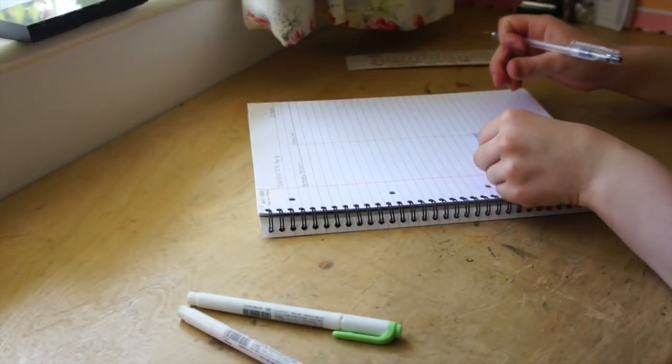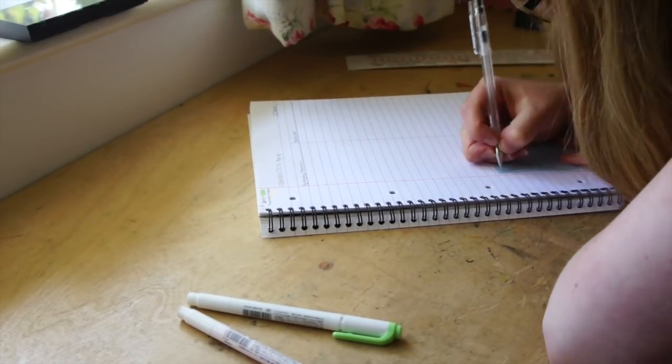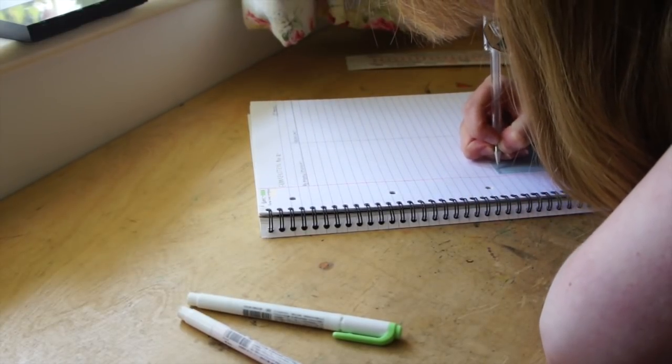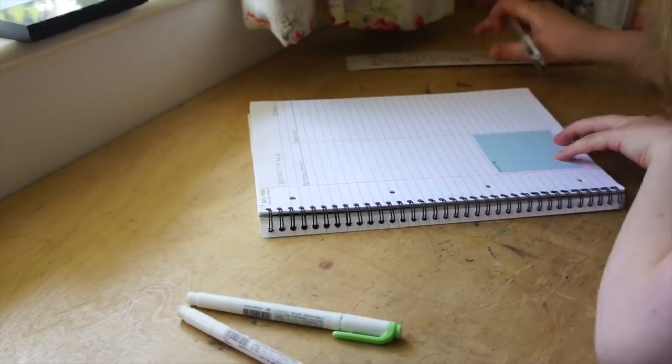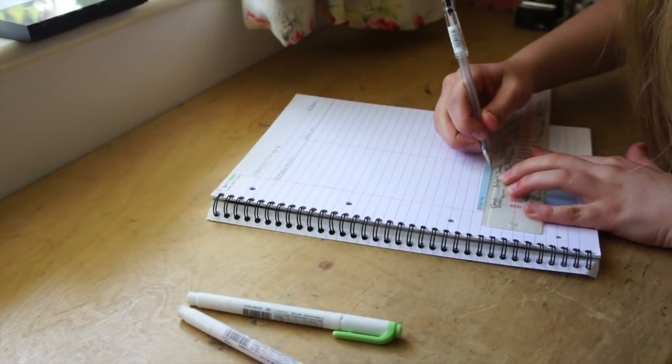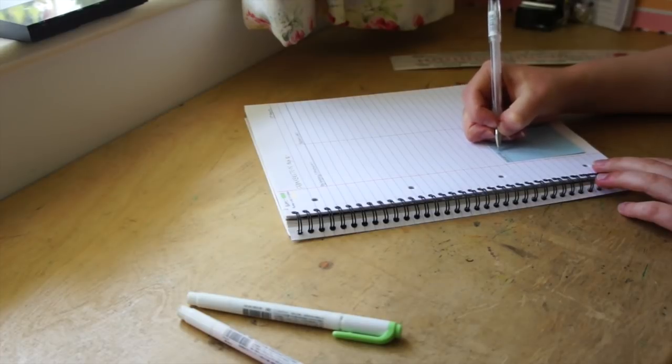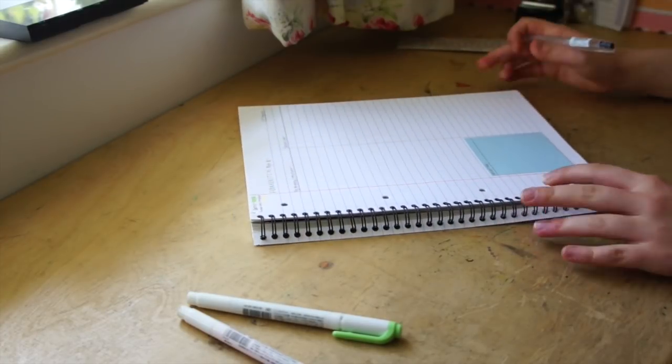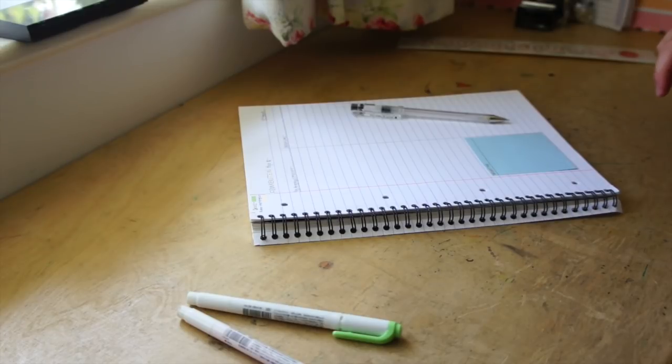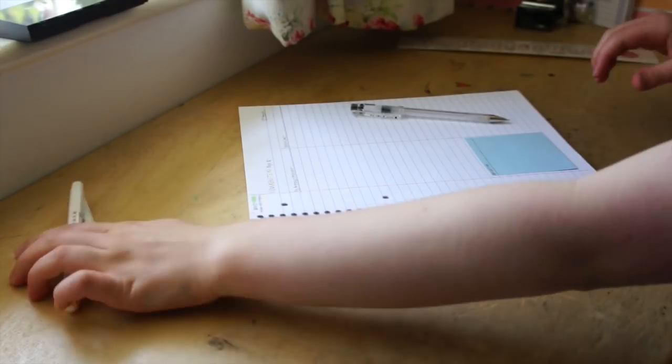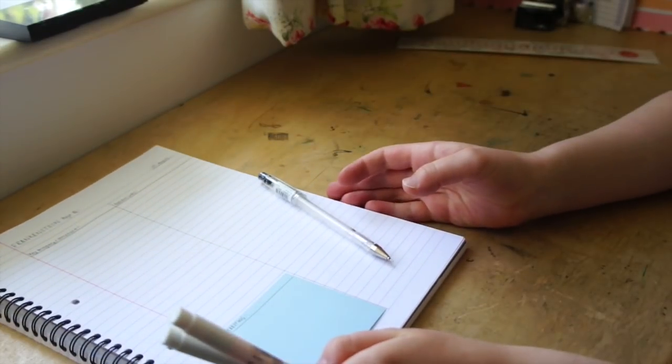I will also use a post-it note and just write interesting on it. So it's anything that I find interesting when I am reading the text. And this doesn't actually have to be relevant to my coursework, to the essay, to anything. It's just things that I find to be academically interesting, and things I might want to comment on or think about further.